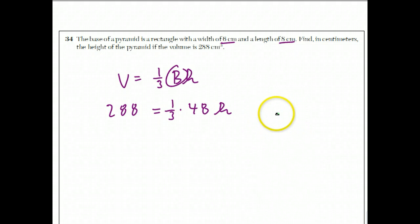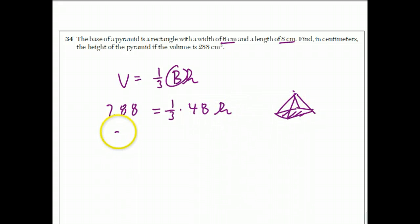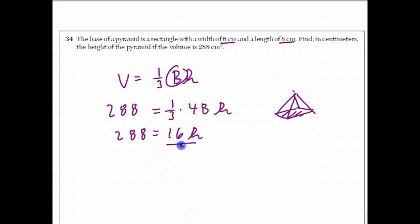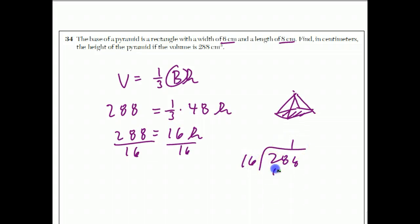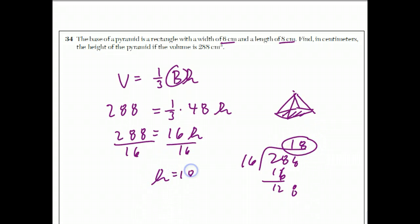The height is what we don't know. Multiply one-third times 48 to get 16, then divide both sides by 16. 288 over 16 gives the height, which is 18. So the answer to this question is 18 centimeters.